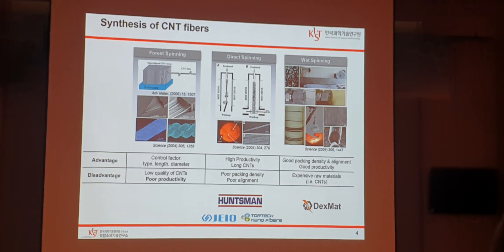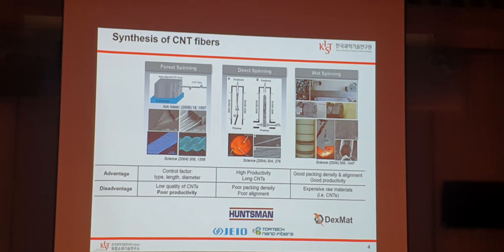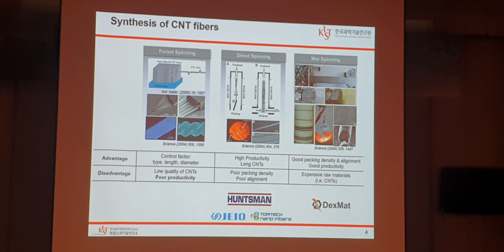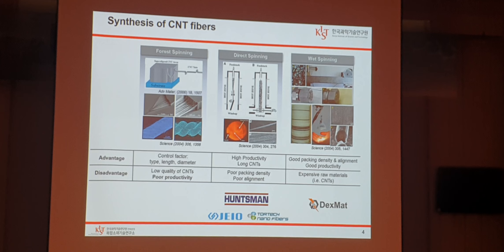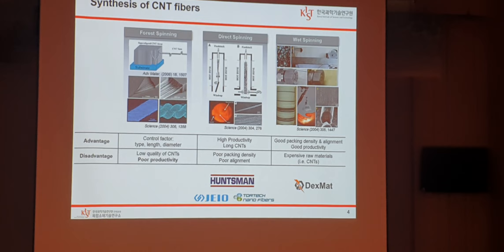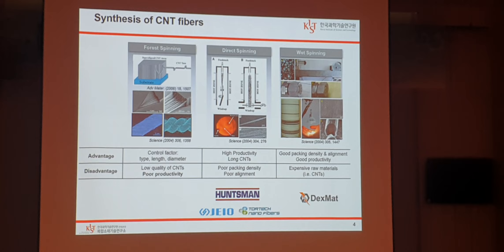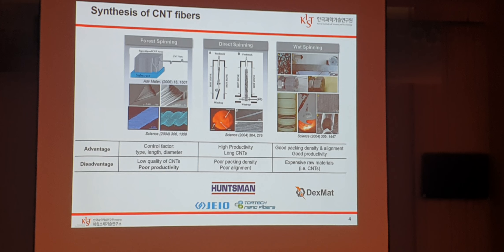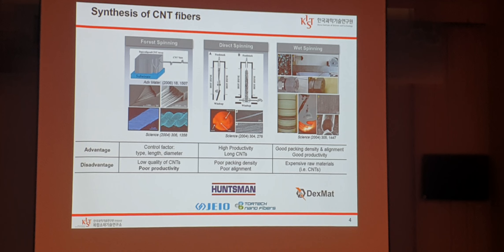There are three synthesis methods for CNT fiber. The first is forest spinning, where CNT fiber is produced from vertically grown CNTs on a substrate. The second is direct spinning, where CNT fiber is directly produced from CNTs synthesized in a vertical reactor. The last is wet spinning, which involves CNT fibers using a well-known wet spinning process with liquid crystalline CNTs. From an industrial perspective, forest spinning has a critical limitation in continuous production, so development worldwide is mainly focused on direct spinning and wet spinning. We have been studying both methods since 2014.